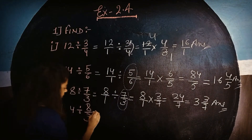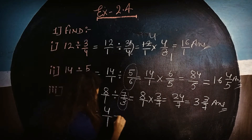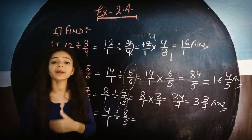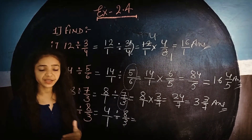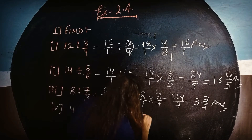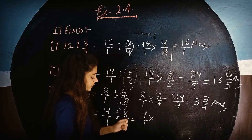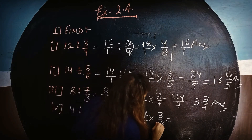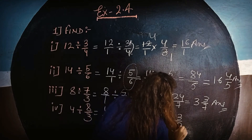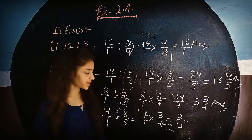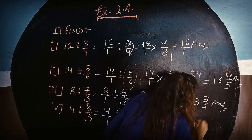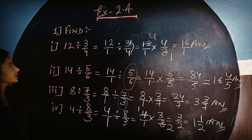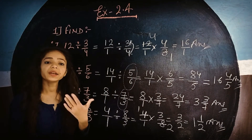Now let's come to fourth part: 4 upon 1 divided by 8 upon 3. Again, change the divide to multiply and take the reciprocal of the second part. We have completed first, second, third and fourth parts. Let's come to the next part.